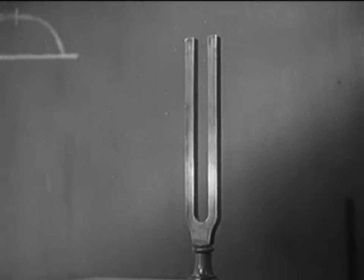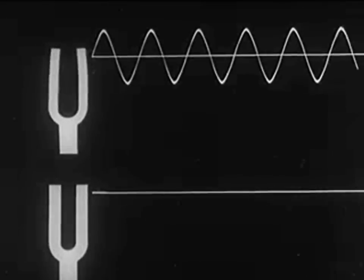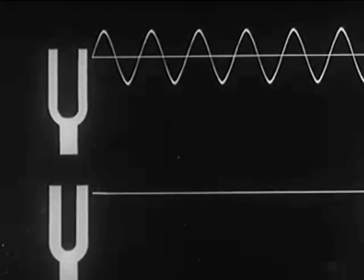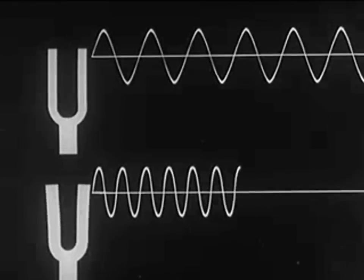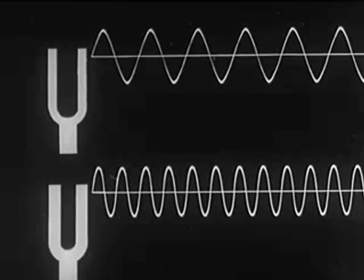What causes such differences in pitch? To explain such differences, we picture two different sound waves. Here the lower fork makes more complete vibrations per second, therefore its frequency is greater.